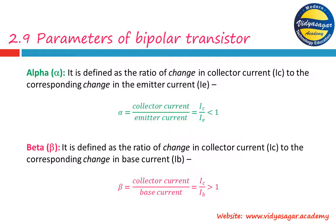The forward and reverse biasing of the PNP transistor is very similar to NPN, except that the current directions are opposite. You can refer to my notes on page number 28 in the second chapter and learn about the forward and reverse biasing in topics 2.7 and 2.8.